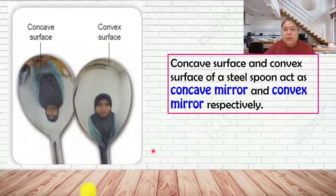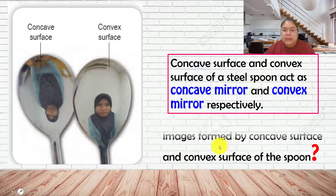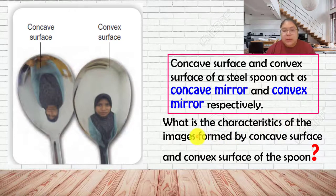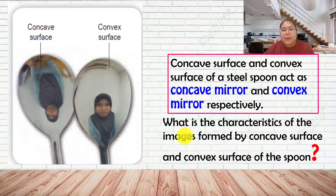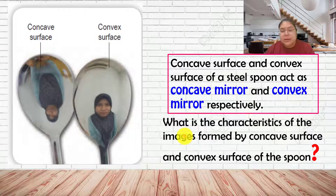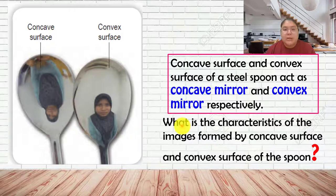The question is: what are the characteristics of the image formed by the concave and convex surfaces of the spoon? We need to find out the characteristics - you need to prove it by drawing the ray diagram to show your image, then state the characteristics.